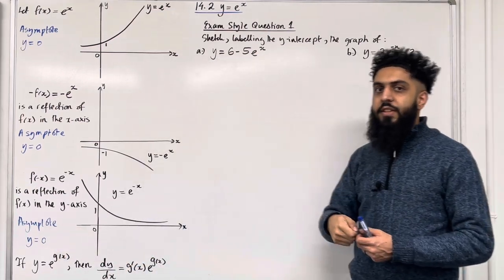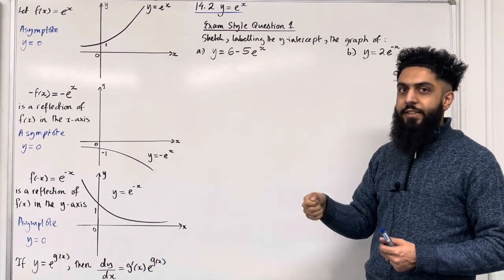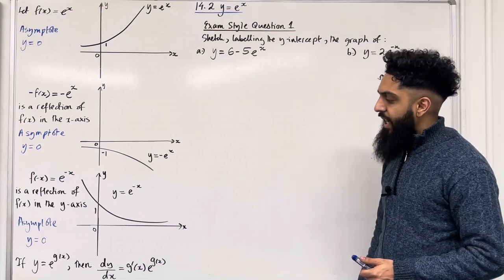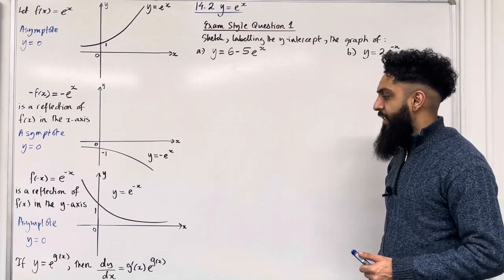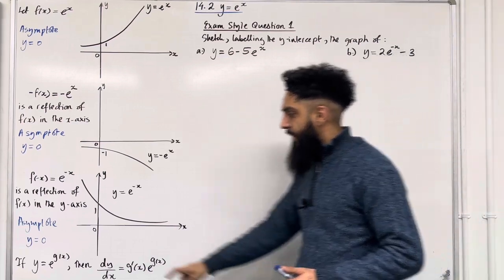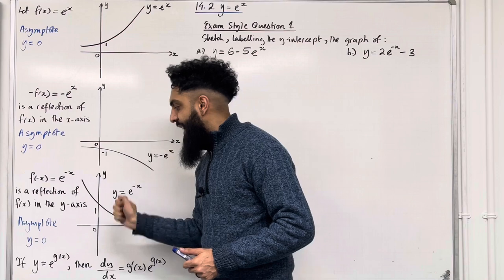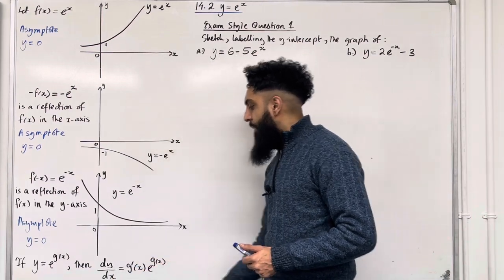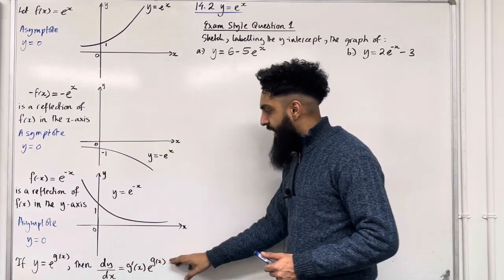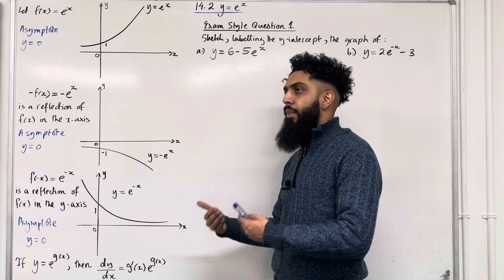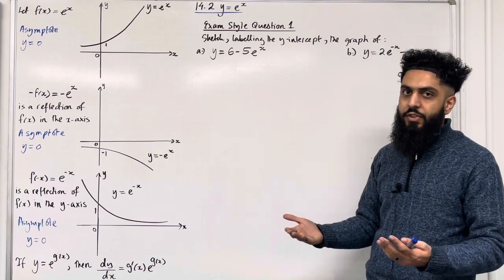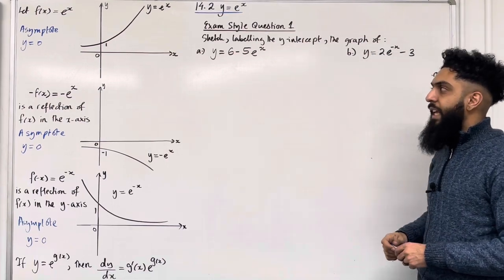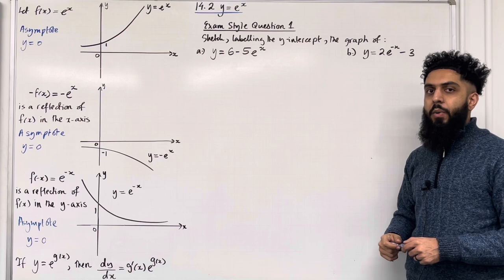If y is equal to e to the power g of x, where g of x is any function, then dy over dx — the first derivative — is calculated by differentiating the power and bringing it down. So we get g dash of x times e to the power g of x, where g of x is the original function. These are the key facts of 14.2 y equal e to the power x.